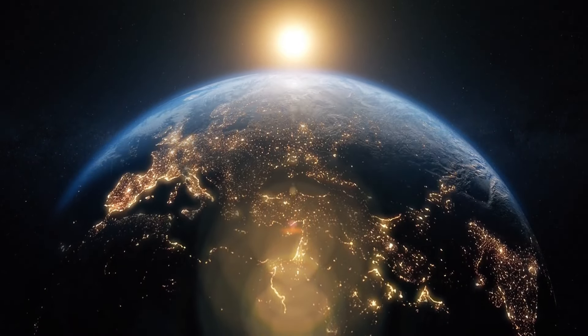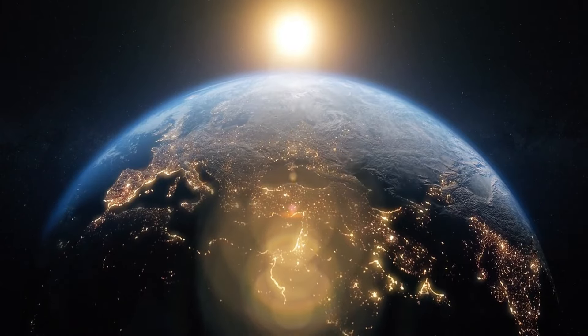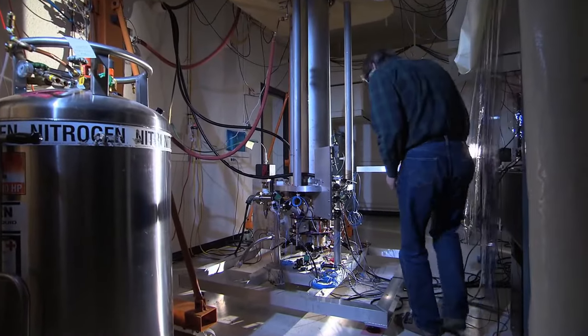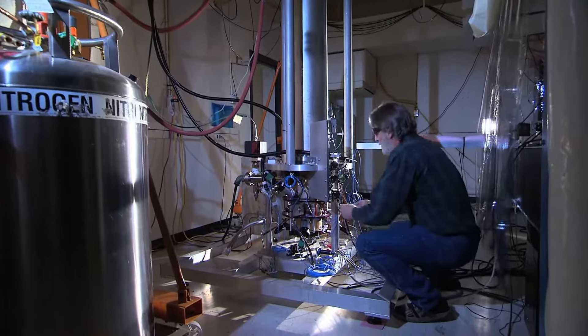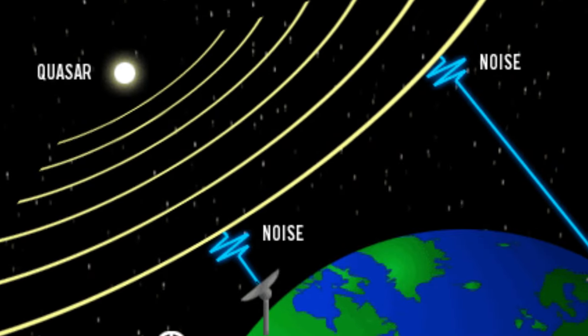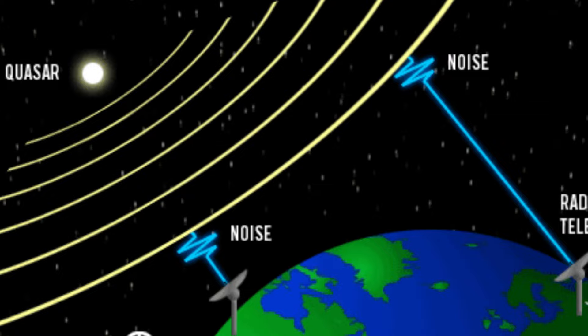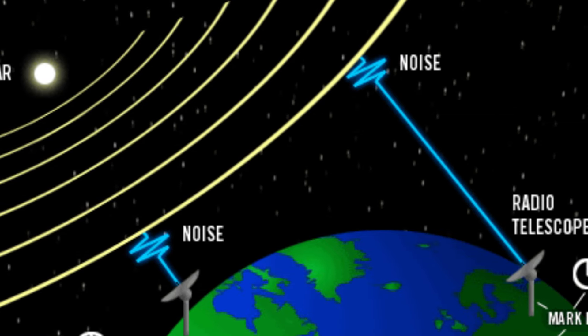The recent observation that the Earth is spinning faster is not entirely understood, but scientists believe it could be due to a combination of these factors. The precise measurement of the Earth's rotation is made using atomic clocks and very long baseline interferometry (VLBI), which tracks the position of quasars in distant galaxies.